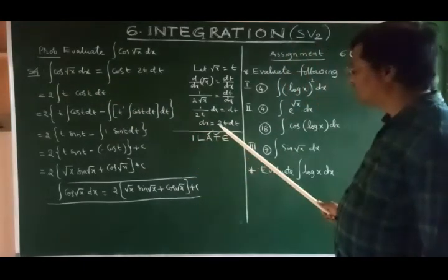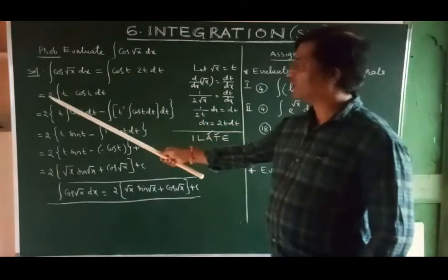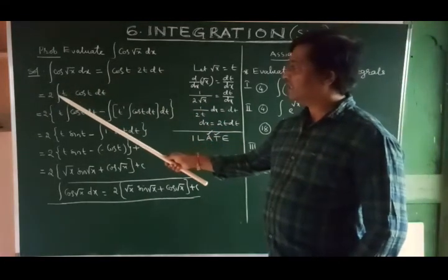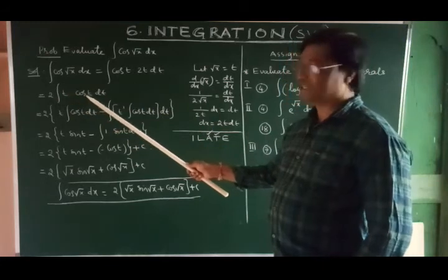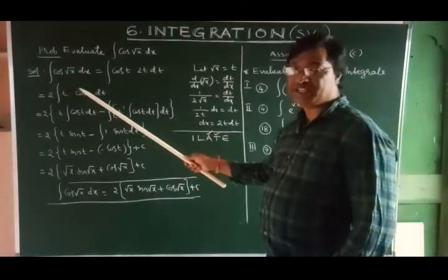cos √x is considered as t. dx equals 2t dt. Now, write these two outside. We got integral uv form. Now, apply our integral uv dx form.